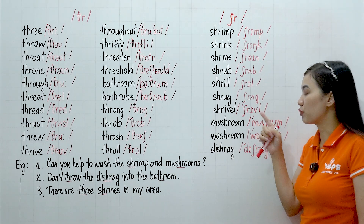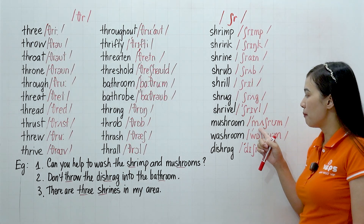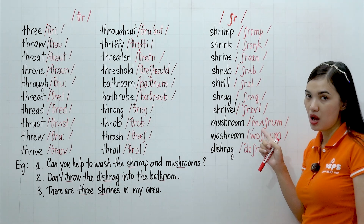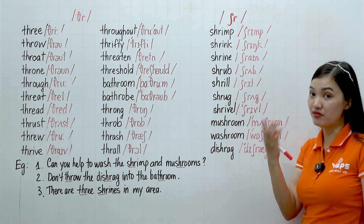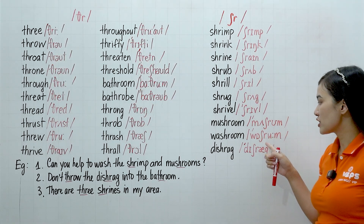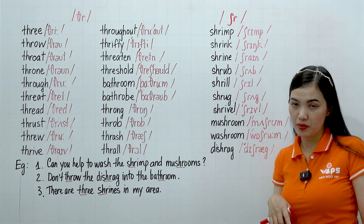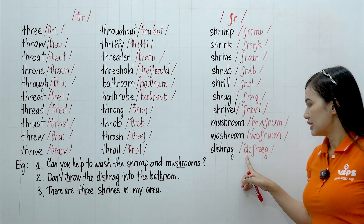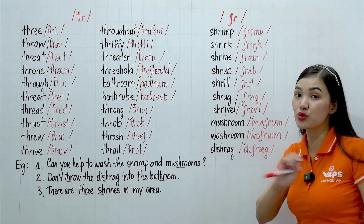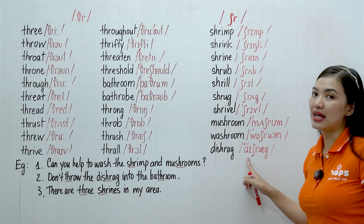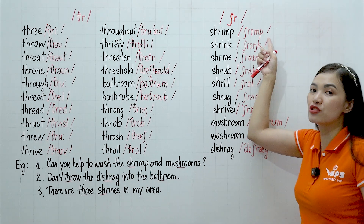That SHR sound we pronounce also for shrivel, shrivel. And this — mushroom, mushroom, mushroom — a kind of vegetable. And this one — washroom, washroom, just like the toilet. And dish rack, dish rack — you use the dish rack to wash the dishes. Now again: dish rack, dish rack.